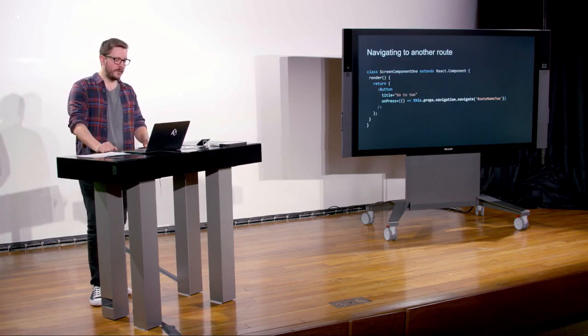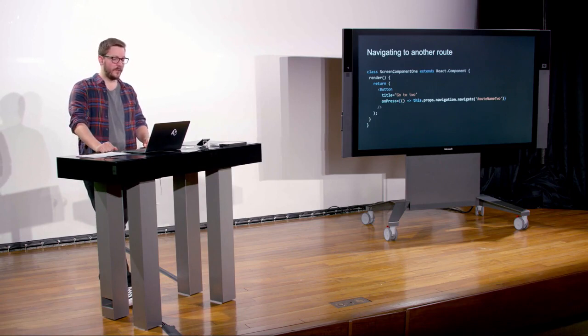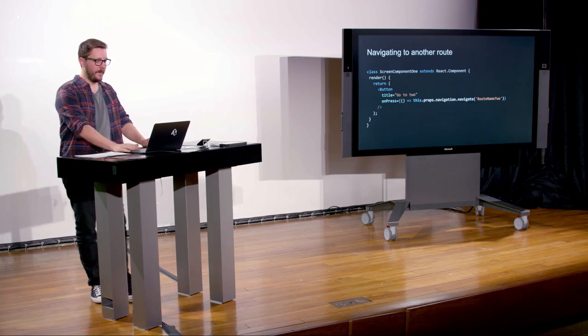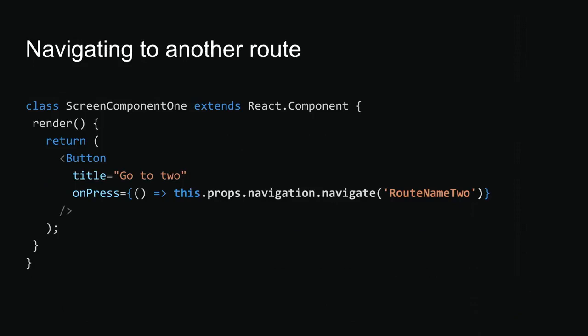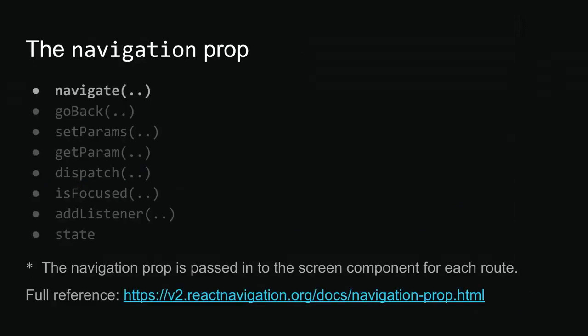To navigate from one screen to another, you call this.props.navigation.navigate and pass in the route name. The navigation prop is passed into every screen component automatically and has a variety of useful methods: navigate, goBack, setParams, and getParam. We'll see more of these shortly, and the documentation covers more advanced use cases.